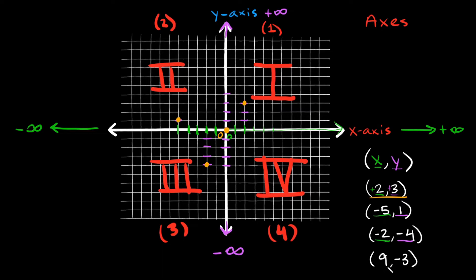This last one is the point nine comma negative three. We're going to move positive nine spaces in the x direction and then negative three spaces in the y direction. Starting at the origin, we go one, two, three, four, five, six, seven, eight, nine in the positive x direction, then move down three spaces: negative one, negative two, negative three. That spot is the point nine comma negative three.